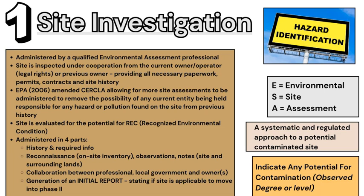Phase one is all about investigation, observations, and creating a report that is evaluated for the potential for a Recognized Environmental Condition, or REC, to be conducted on that site — assessing whether it is worth proceeding to phase two cleanup. Phase one happens in four parts: the history and required information, reconnaissance and on-site inventory of observations, collaboration between local, state, and federal governments. The final report gives a verdict on whether the site is okay or requires progression to phase two due to observed pollution, hazardous, or contaminated material.